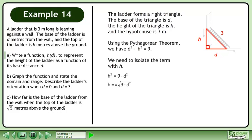Square root both sides of the equation to get h equals plus minus the square root of 9 minus d squared. Reject the negative case since the ladder can't have a negative height.